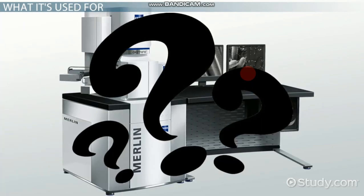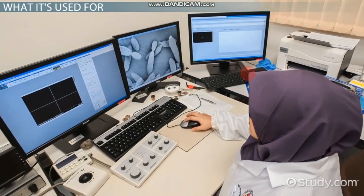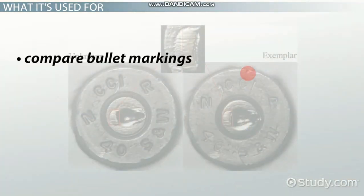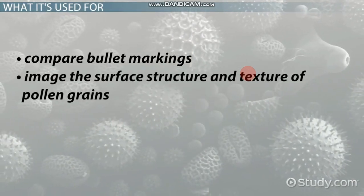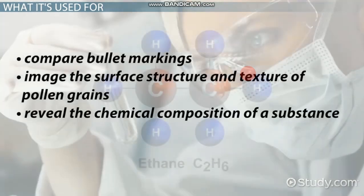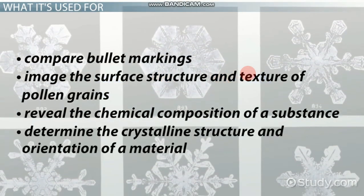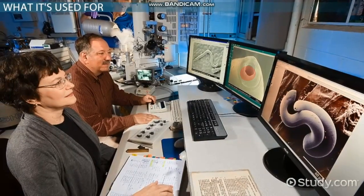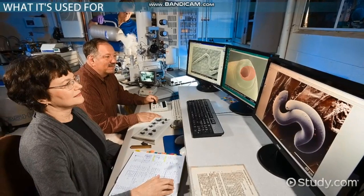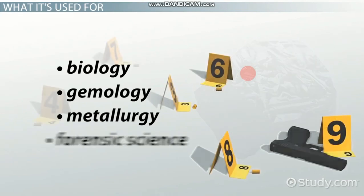So where or why would a scanning electron microscope be used? It turns out it's useful for a lot of things. An SEM can help compare bullet markings in order to identify a firearm during a police investigation, image the surface structure and texture of pollen grains for scientific investigation, help reveal the chemical composition of a substance being looked at, and determine the crystalline structure and orientation of a material. As a result, scanning electron microscopy can be used in a wide variety of fields, such as biology, gemology, metallurgy, and forensic science.